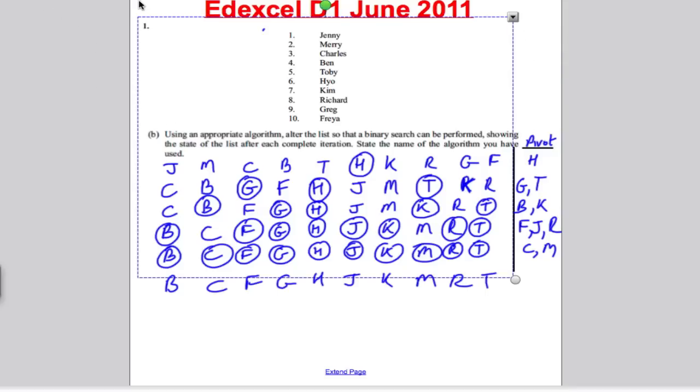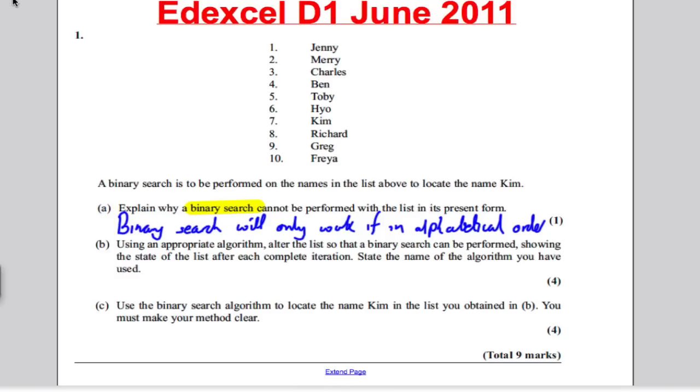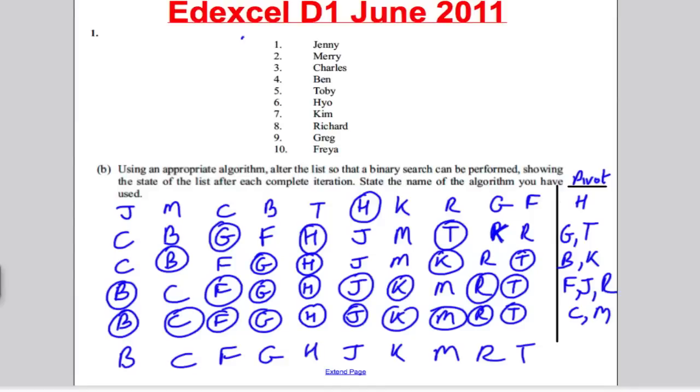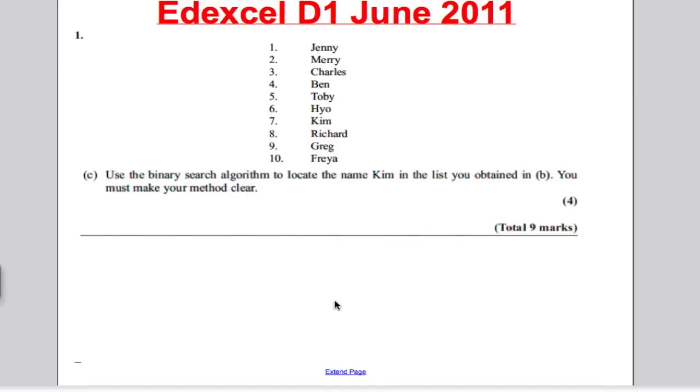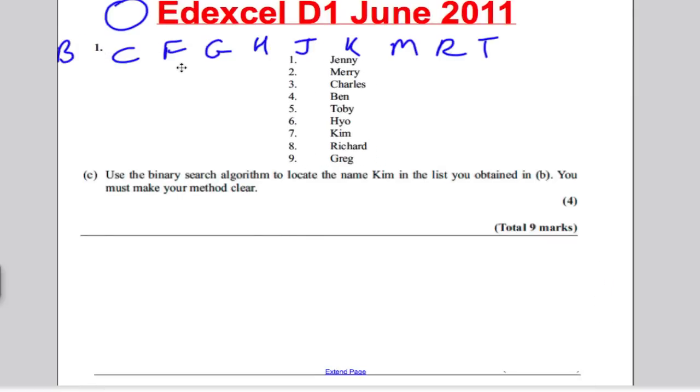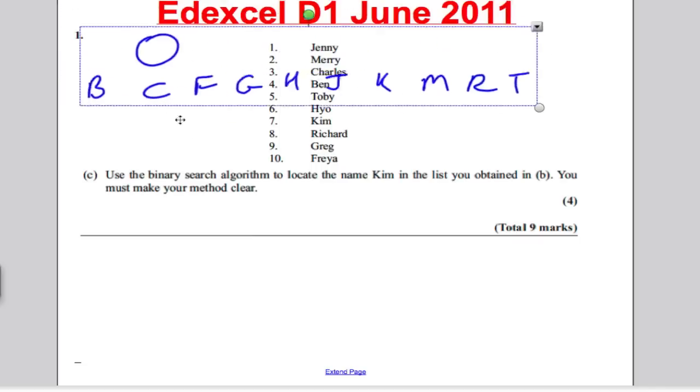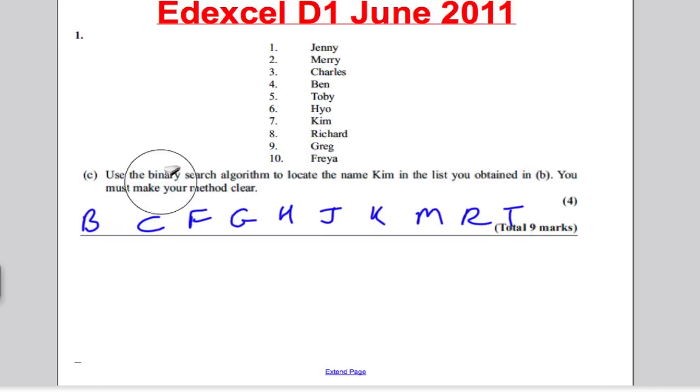Now let's continue with this question. Part C of the question asks us to find Kim using a binary search from the order you got in this list here. So the first thing we need to do is we probably need to copy down this order into part C. And this was our order that we got here. I'm going to keep it written there for our benefit, and we're trying to find Kim in that list. So basically we're trying to find the K in that list using a binary search. So I'm going to do my working up here and say step one, I've got ten items. Middle is the six, which in this case is one, two, three, four, five, six, which is therefore Jenny.